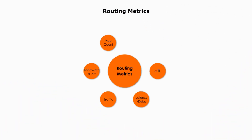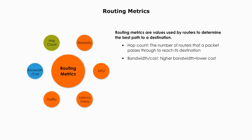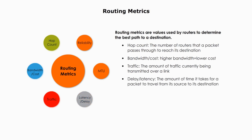Now let's talk about routing metrics. Routing metrics are values used by routers and other networking devices to determine the best path to a given destination. Some common routing metrics include: hop count — the number of routers that a packet passes through to reach its destination; bandwidth or cost — high bandwidth means lower cost; traffic — the amount of traffic currently being transmitted over a link; and delay or latency — the amount of time it takes for a packet to travel from its source to its destination.